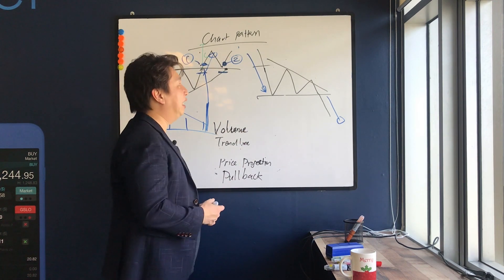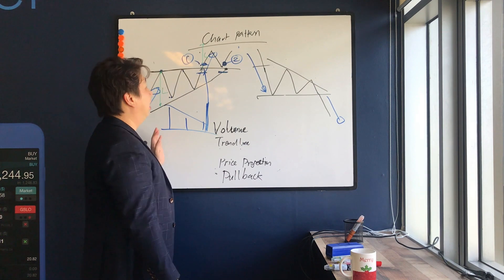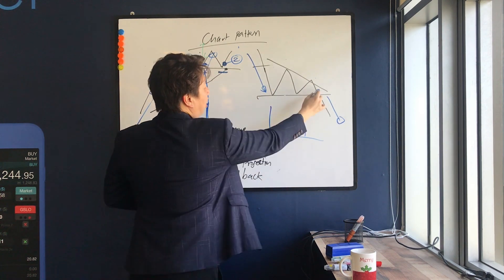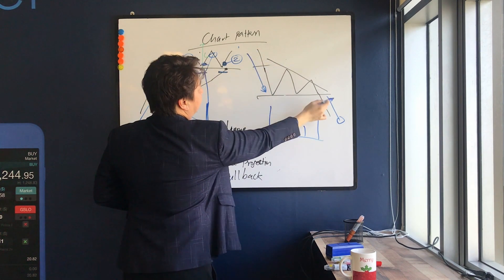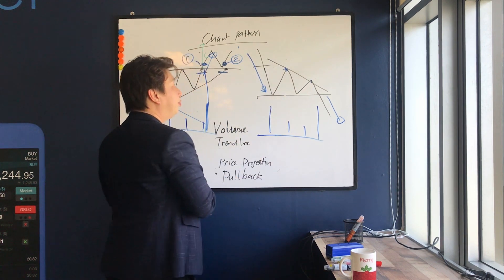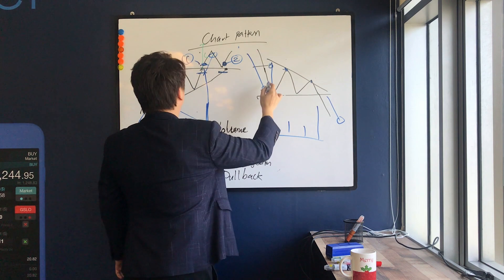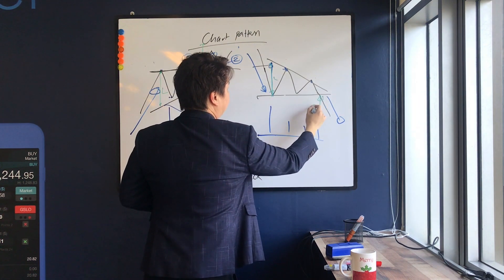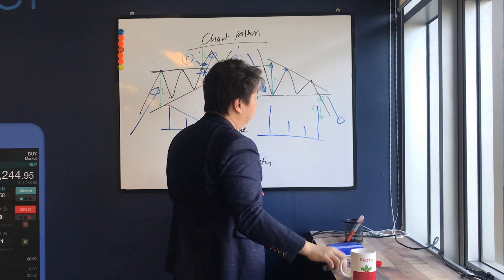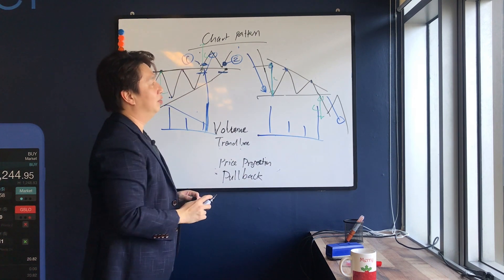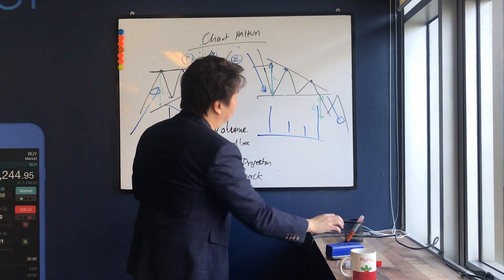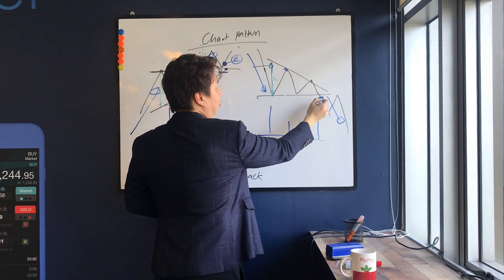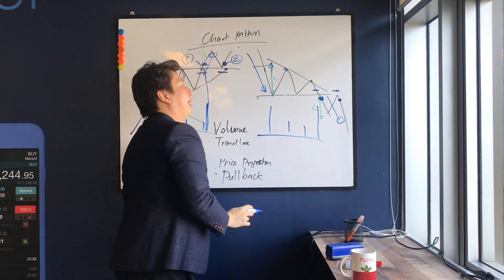The second pattern is the descending triangle, which is the opposite of the ascending triangle. The volume is reducing again, and we have high volume reducing to the breakout point where volume increases again. You can draw a trend line forming the lower highs. For price projection, we use the highest point of this line to project it downwards. After the breakdown move there will usually be a pullback to retest this line before the final move down.